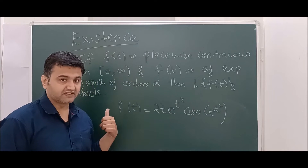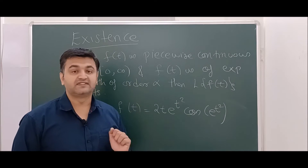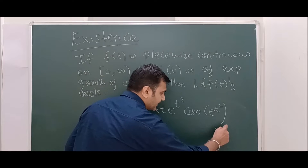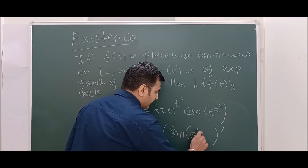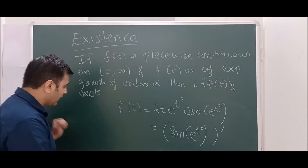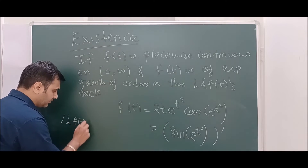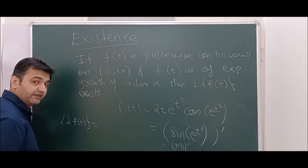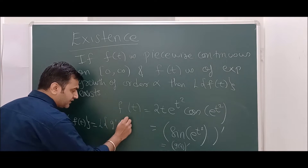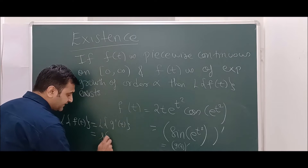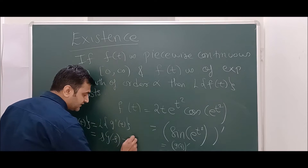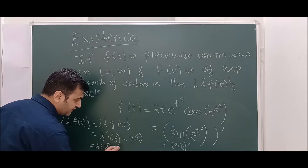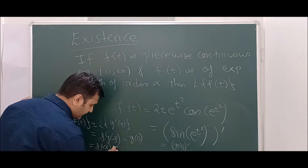So this is an example that is piecewise continuous but not of exponential growth — yet its Laplace also exists. To prove this, observe smartly that this function is nothing but the derivative of g(t) = sin(e^(t²)). Therefore, the Laplace of f(t) = Laplace of g'(t) = s · G(s) − g(0), and g(0) = sin(1). So it is enough to show that the Laplace of g exists.